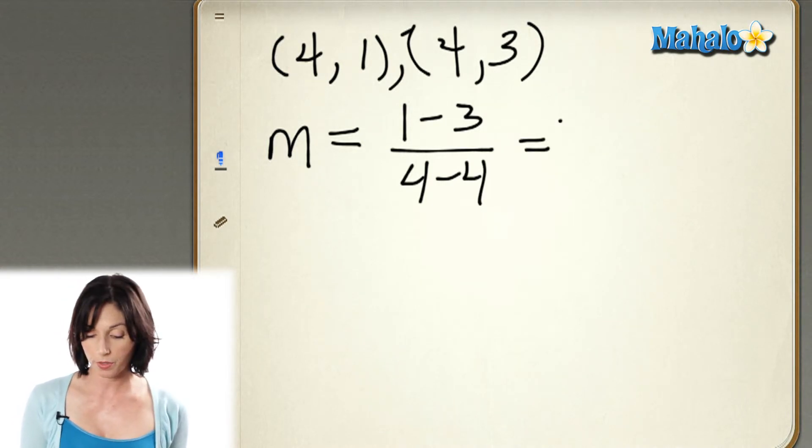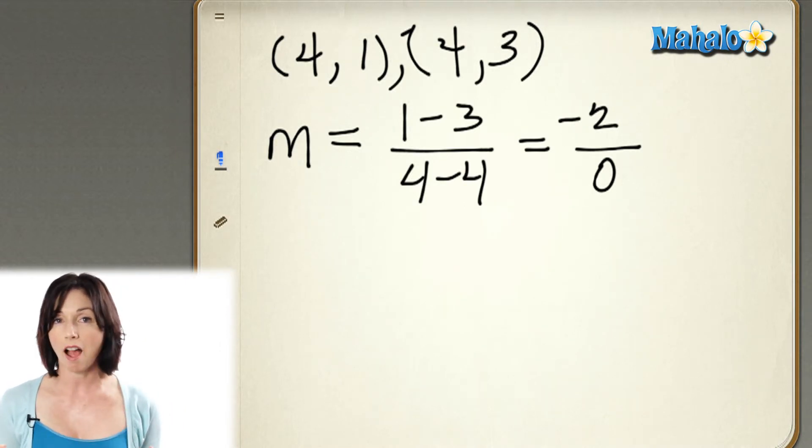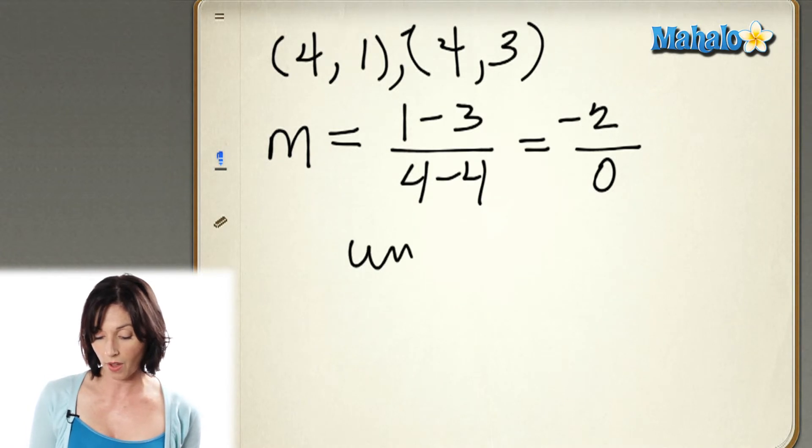1 minus 3 is negative 2, and 4 minus 4 is 0. But we're trying to divide by 0, and that's not defined. So here we have a slope that is undefined.